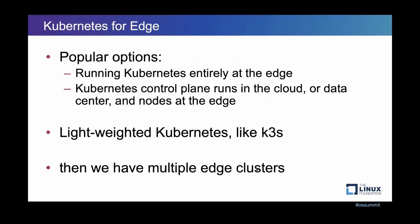Let's look at some of the most popular options when we want to deploy Kubernetes for edge computing. The first way is to deploy a full-fledged cluster at each edge location, meaning the Kubernetes control plane and worker nodes are deployed on edge nodes. With this way, Kubernetes is fully autonomous at the edge.